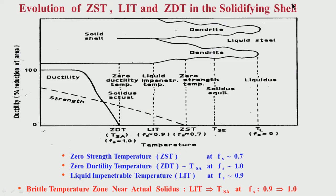In the last session, I talked about the zero strength temperature, the zero ductility temperature, and the liquid impenetration temperature. These are basically important parameters which we have to keep in mind while considering what is the strength or ductility of the solidifying shell.